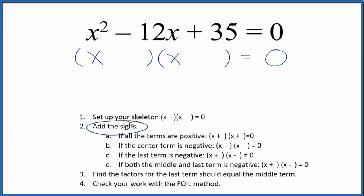Then we look at the signs. So what signs do we have? Looks like the middle term here, that's negative. That center term is negative. We're going to put a negative and a negative in our skeleton equation, like this.